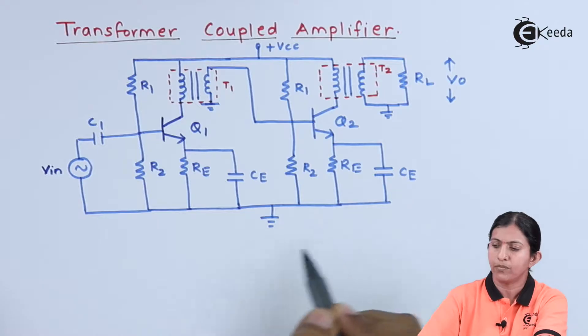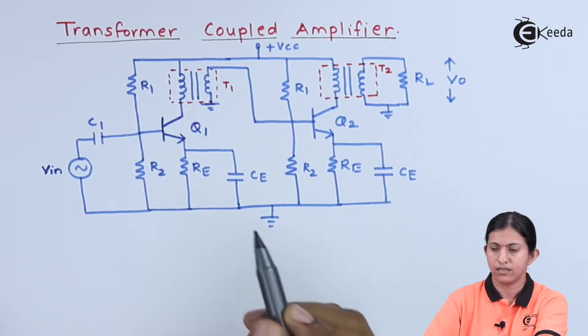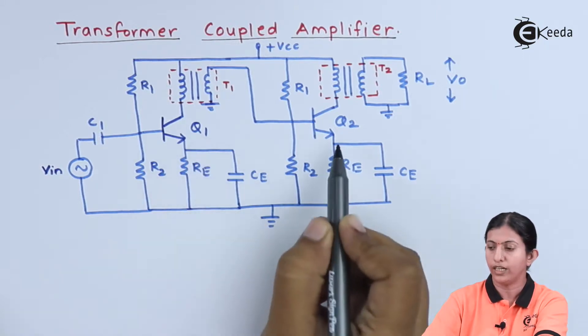This is the circuit diagram of a transformer coupled amplifier. We are using two NPN transistors, Q1 and Q2.